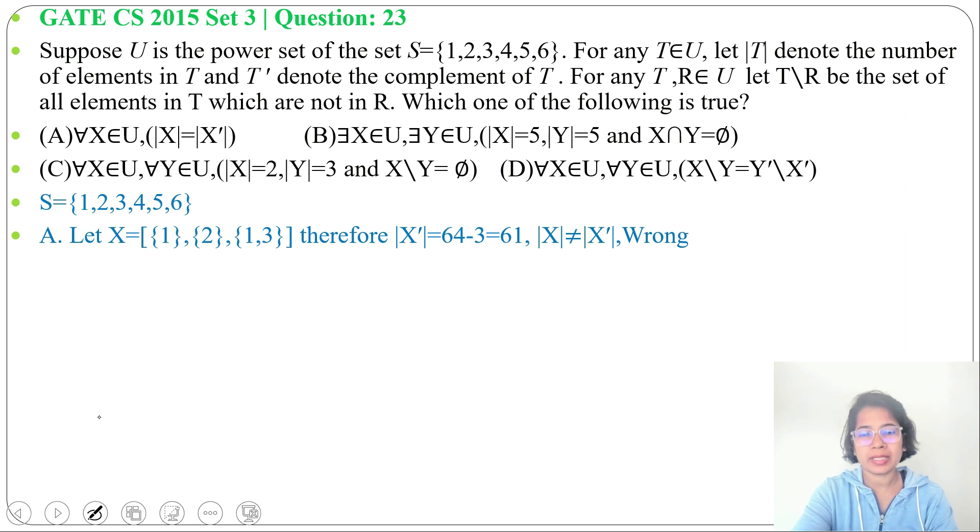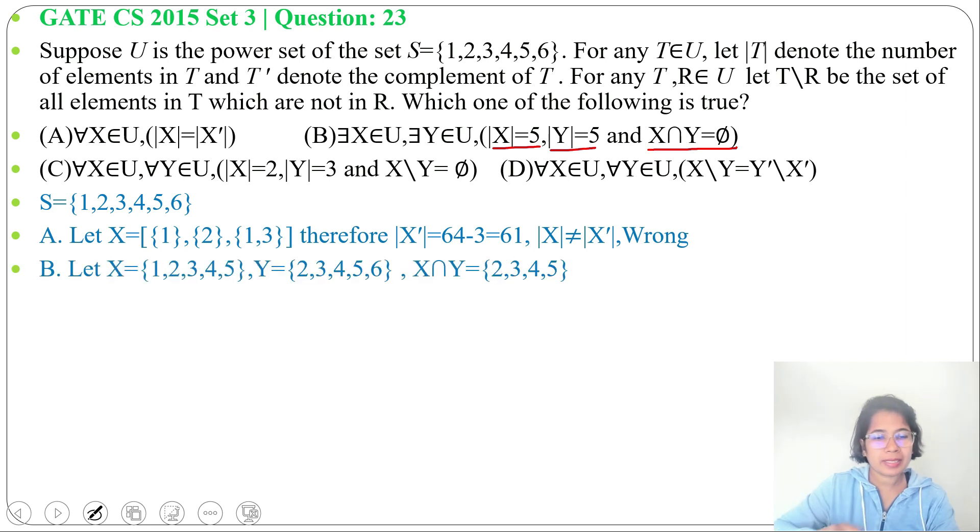Next option B: there exists X belongs to U, there exists Y belongs to U such that |X| equals 5, |Y| equals 5, and X∩Y equals 5. Let X contain {1, 2, 3, 4, 5} and Y contain {2, 3, 4, 5, 6}.